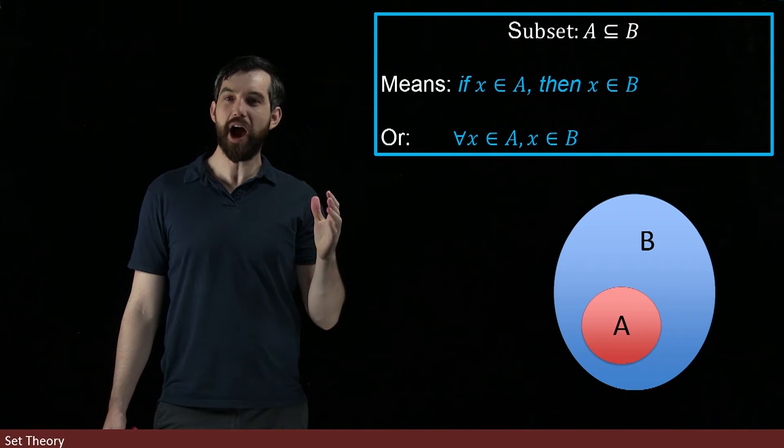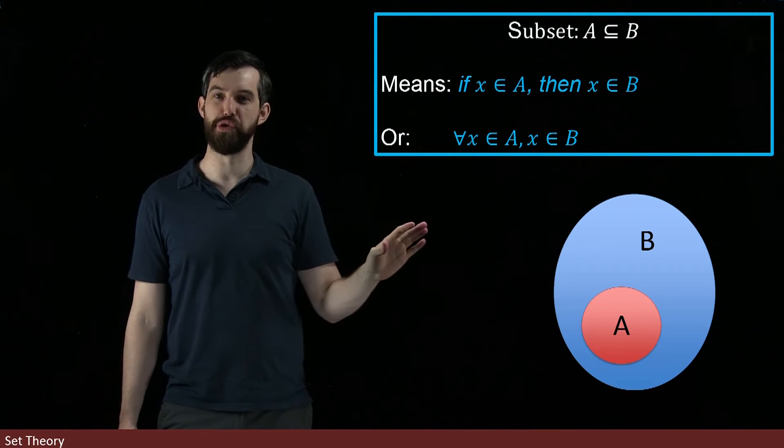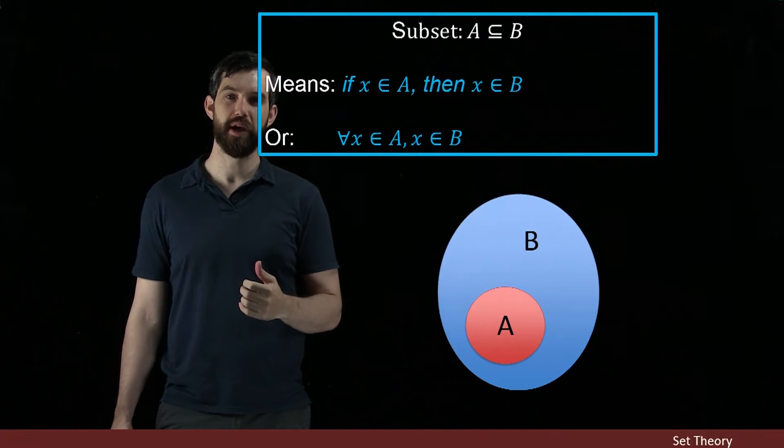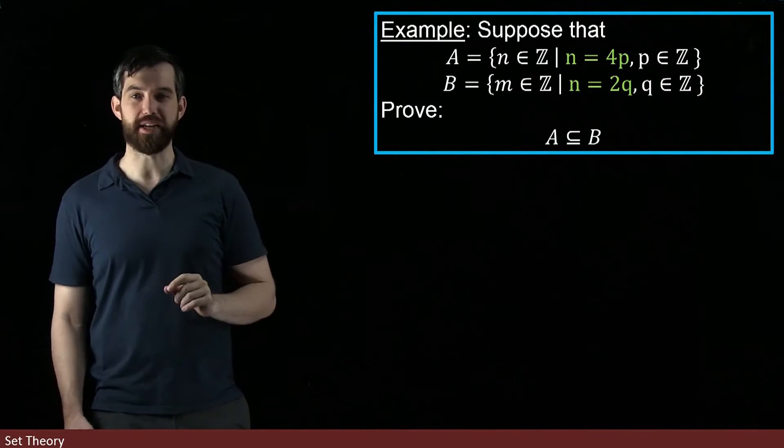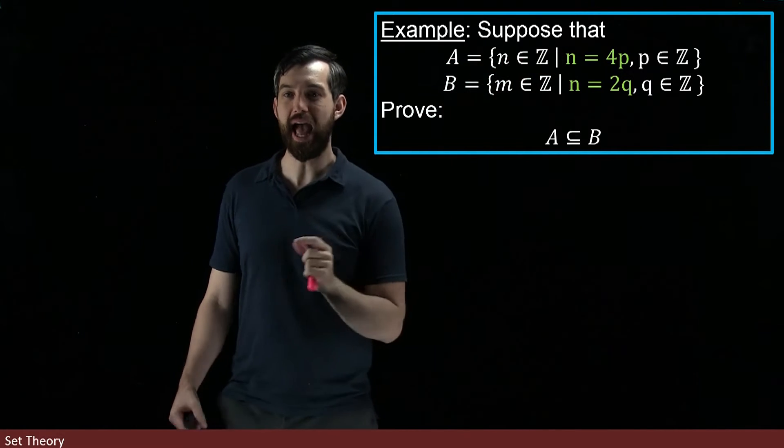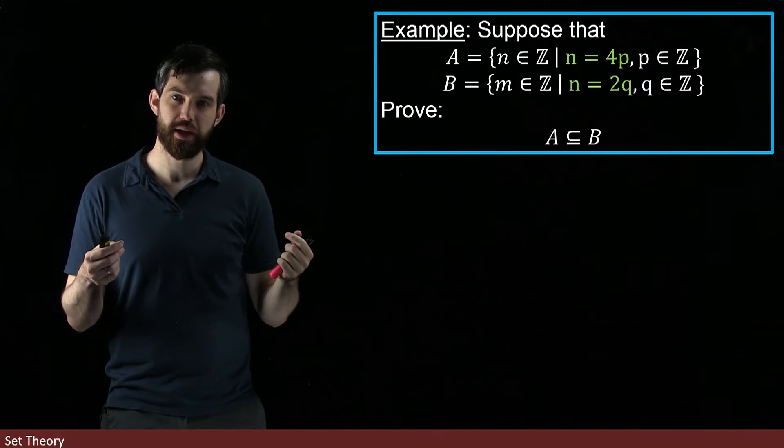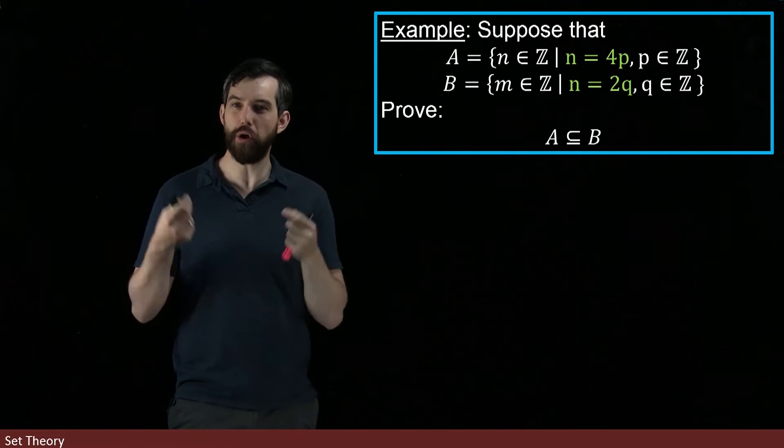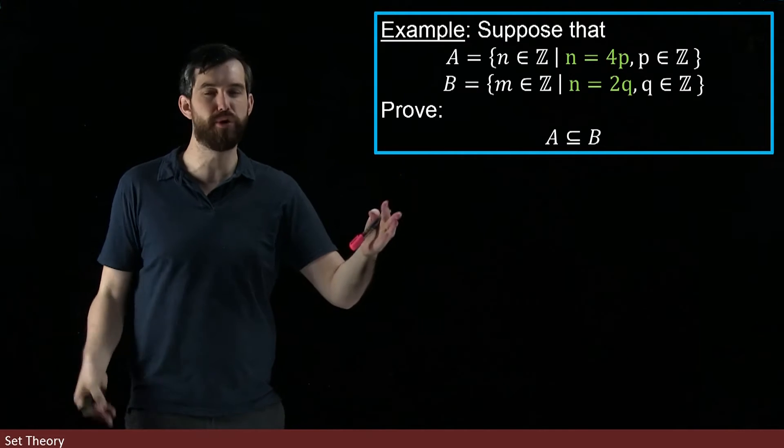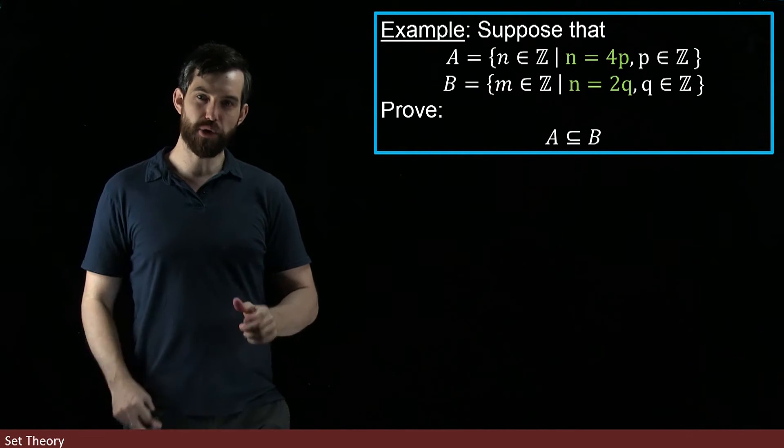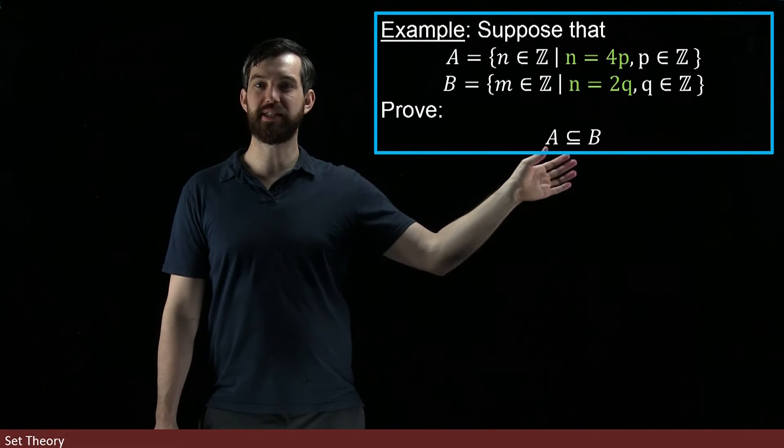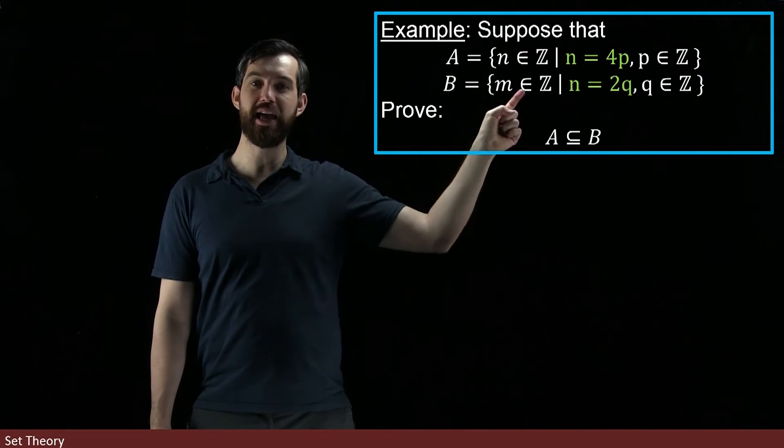Let's see how we can formally prove this set containment in a specific example. What I'm going to look at here is I have two different sets. The one set A is all integers that can be written as 4 times p, and the set B is all integers that can be written as 2 times some q, where p and q are both integers. So then what we're trying to prove is that A is a subset of B, that everything in A is inside of B.